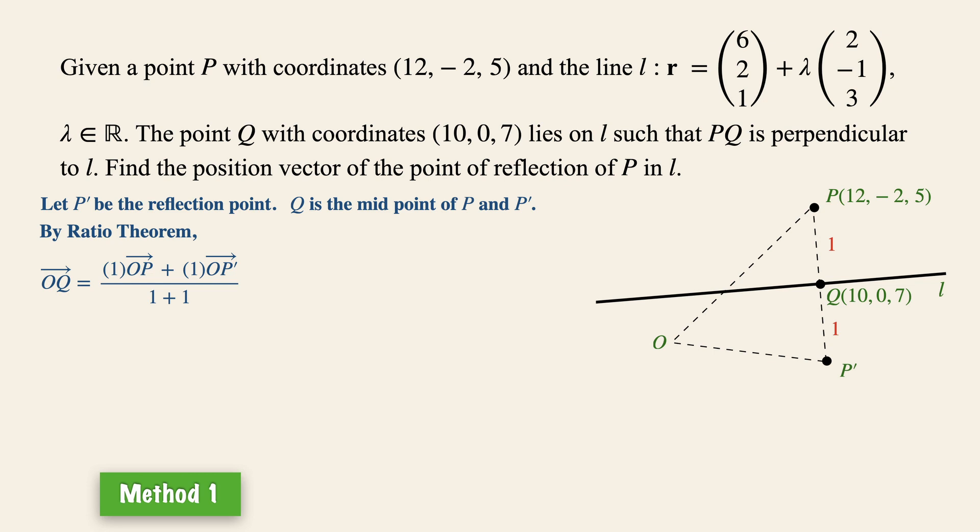Now remember, our objective is to find the reflection point. So we need to make the vector OP' the subject by multiplying 2 on each side and placing the vector OP' on the left side of the equation. Now substituting the values from the question,